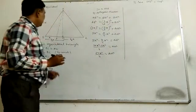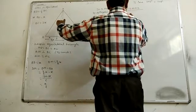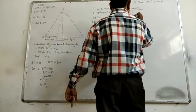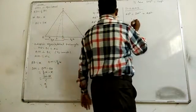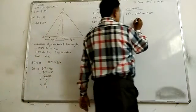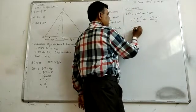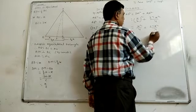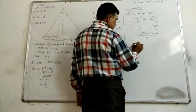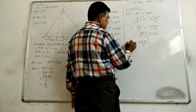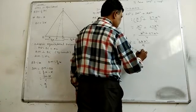Now in triangle AMD, using the Pythagorean theorem: AD square equals MD square plus AM square. MD is x by 2, so MD square is x square upon 4. AM square is 27x square upon 4. Therefore AD square equals x square upon 4 plus 27x square upon 4, which gives 28x square upon 4, so AD square equals 7x square.